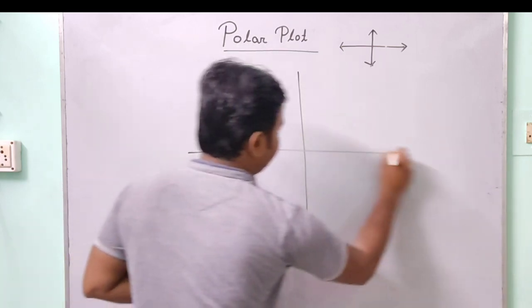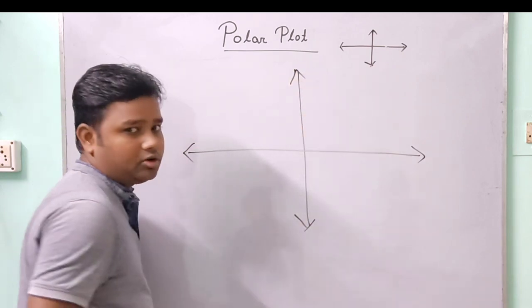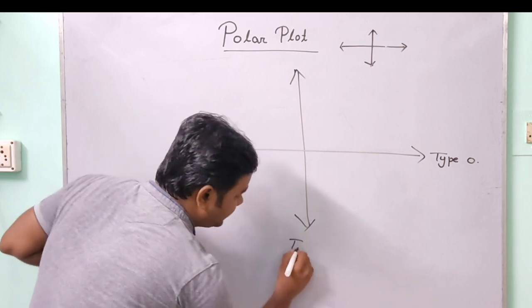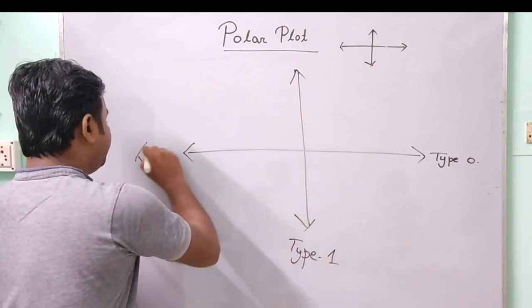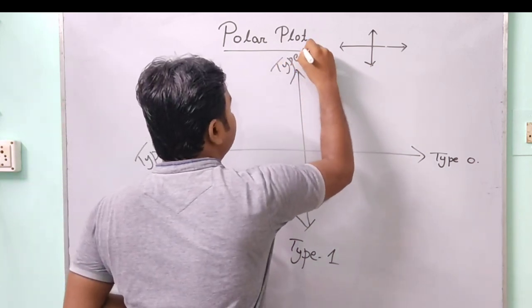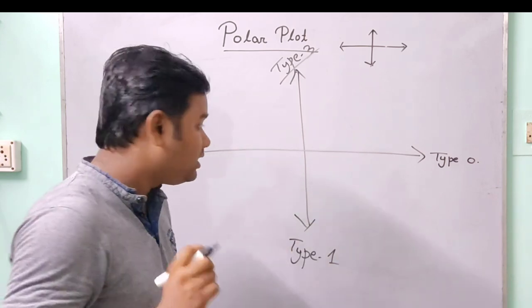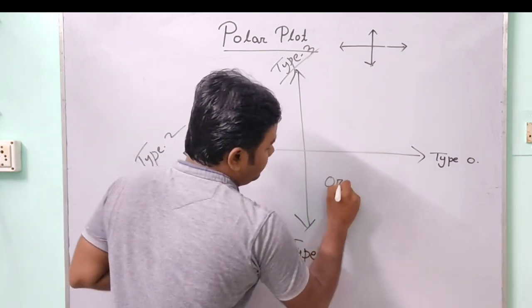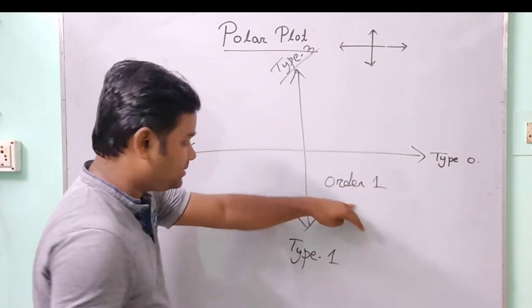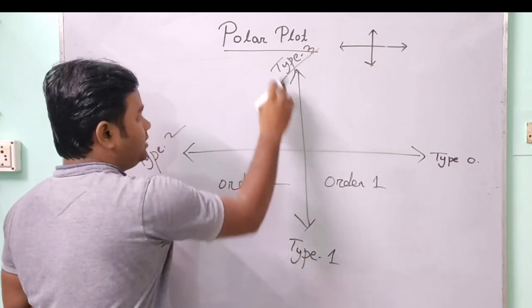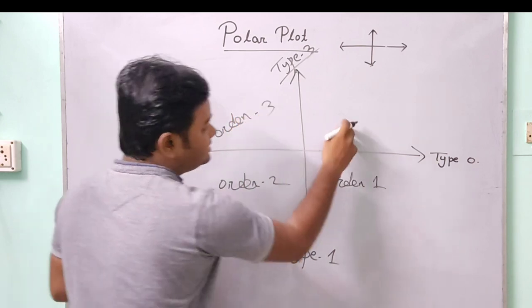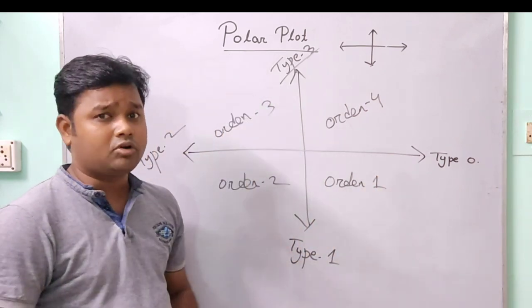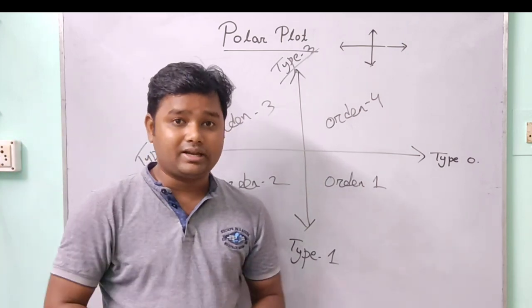Let's look at the graph. In this curve, we will draw the polar plot. The type 0 starting point is here, this is the type 1 starting point, this is type 2, and this is the type 3 starting point. These are the starting points for each type of control system. For order 1, we use this place; this place is used for order 2; this quadrant is used for order 3; and this is for order 4. The polar plot always starts from the type place and always ends at the order place.